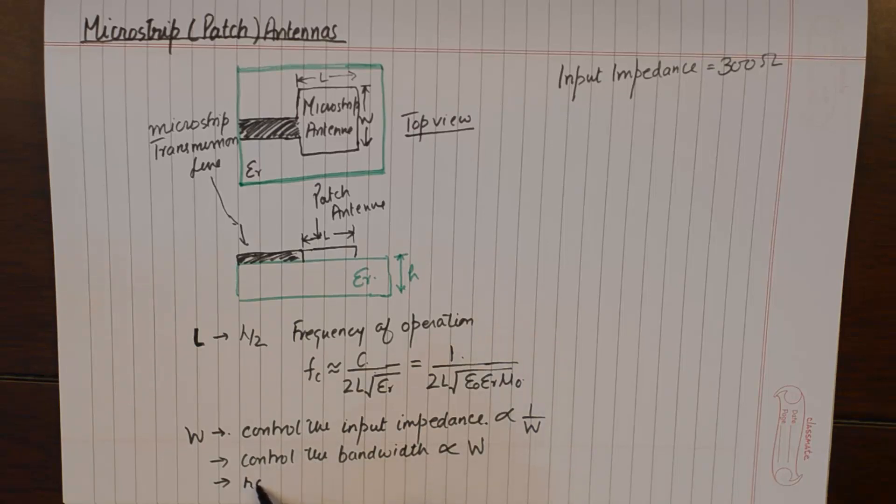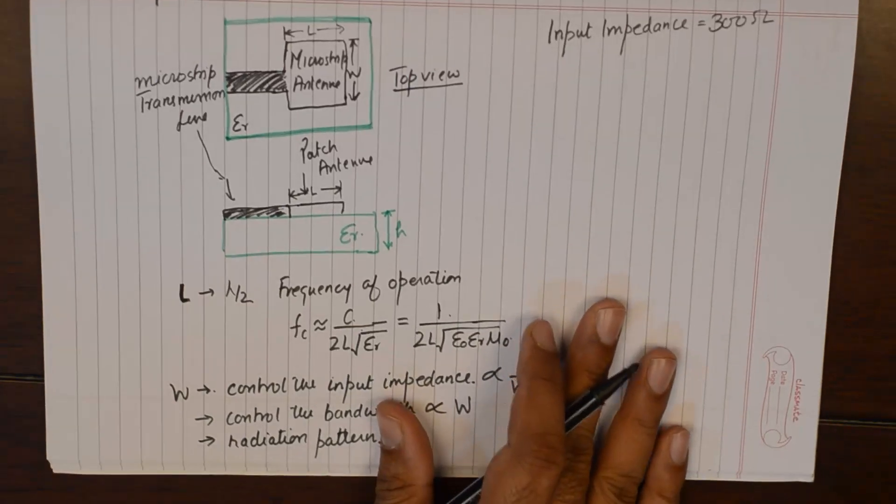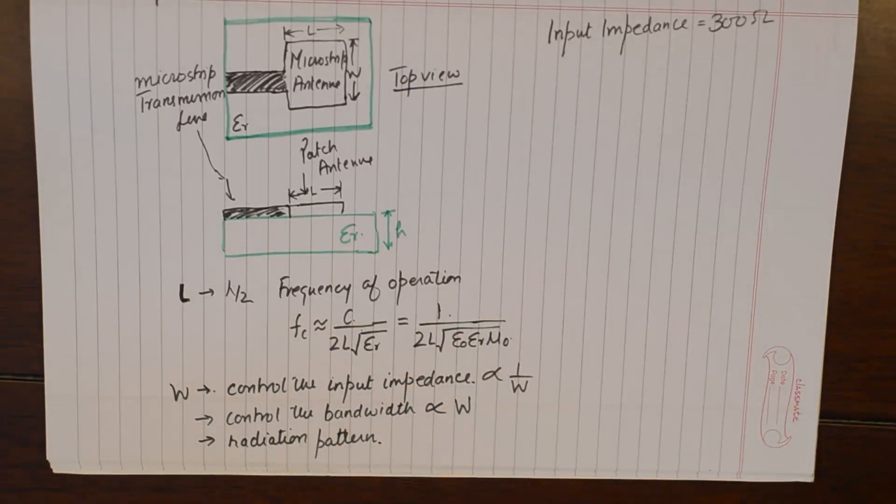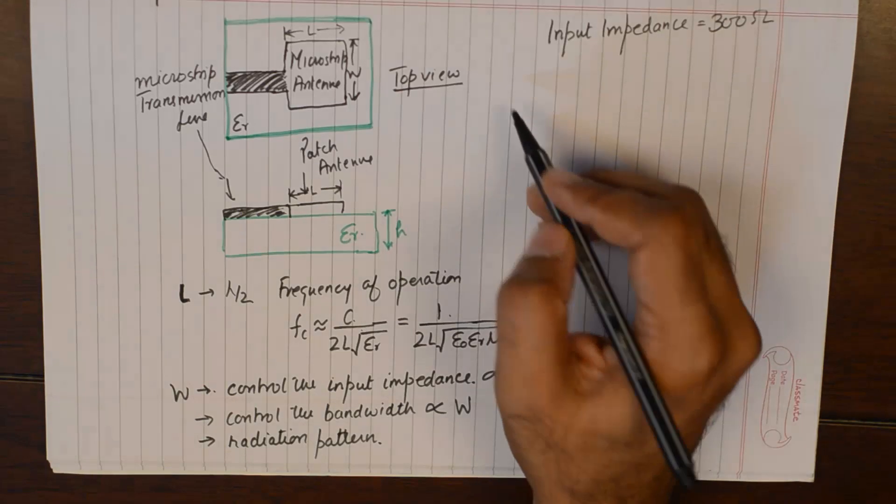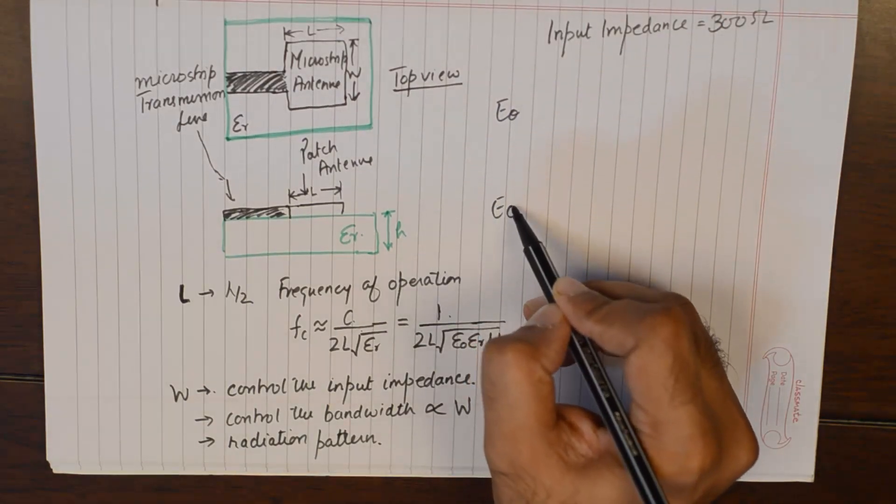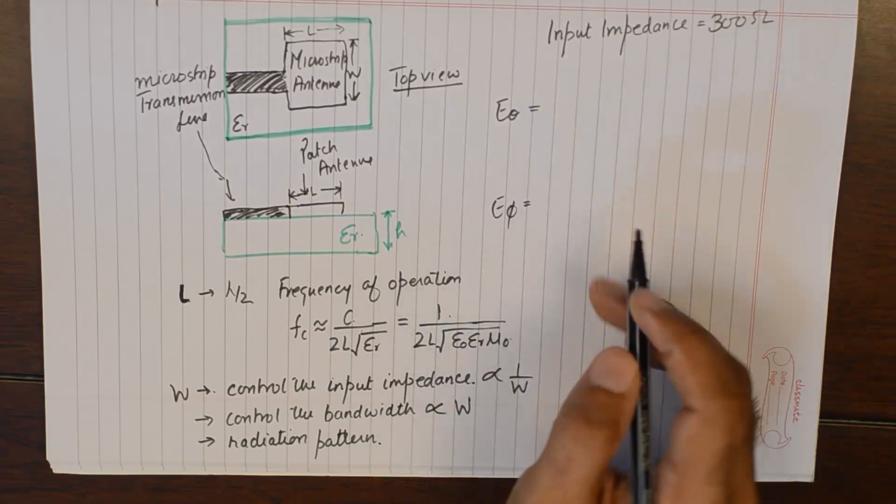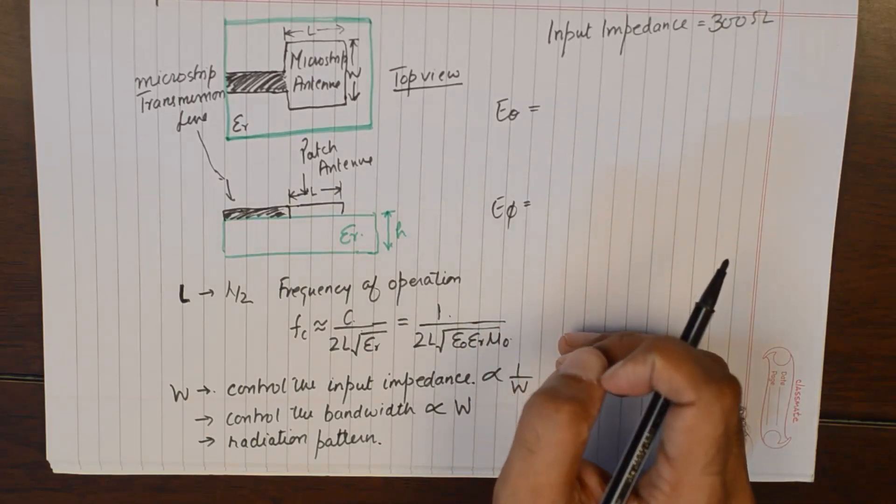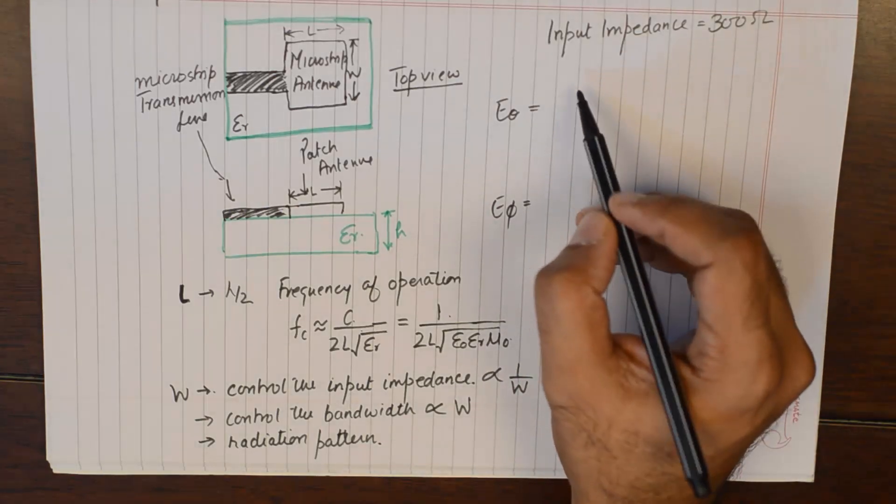Another thing that width controls is the radiation pattern. The radiation pattern of the patch antenna has the formula in spherical coordinates as E theta and E phi. I will write down the values, the direct values here.